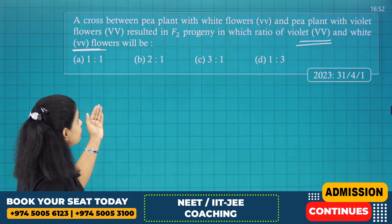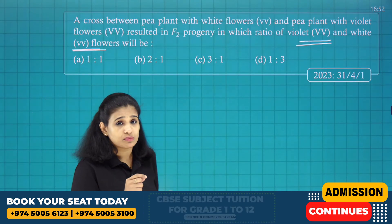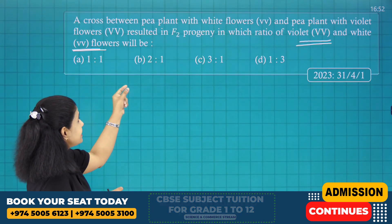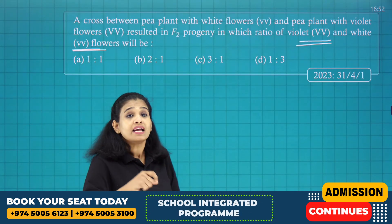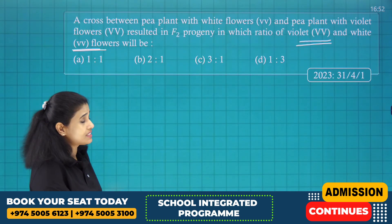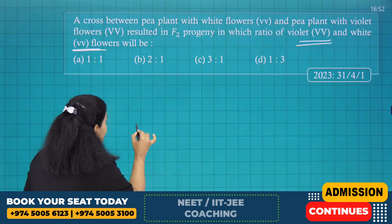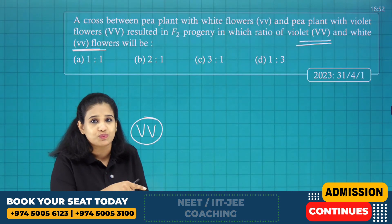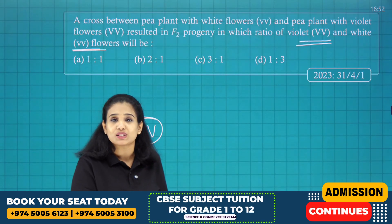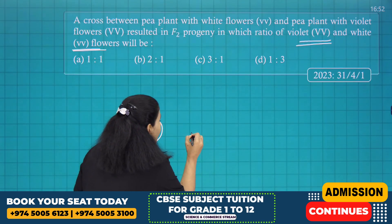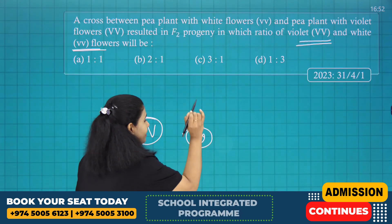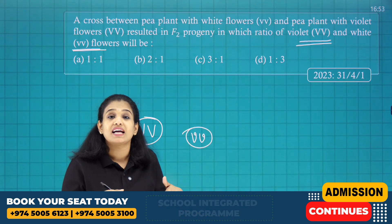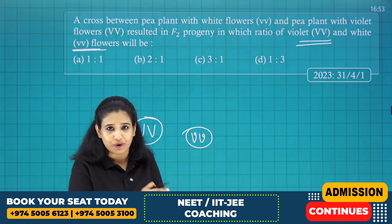Next question: A cross between a pea plant with white flowers (vv) and a pea plant with violet flowers (VV) — in the F2 progeny, in which ratio is homozygous violet (VV) to homozygous white (vv)? You have to find the ratio of homozygous violet and homozygous white in F2 progeny.